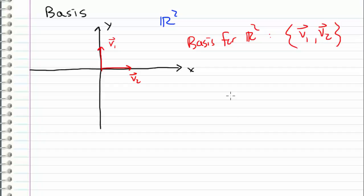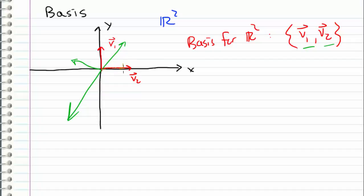Any other vector in R2 can be expressed as a linear combination of v1 and v2. For example, I can scale v2 up to a point and then add v1 scaled appropriately to produce a given vector. Similarly, I can go along v2 in one direction and up v1 in another direction to reach other vectors. You can see that any point in R2 can be reached via linear combinations of v1 and v2.